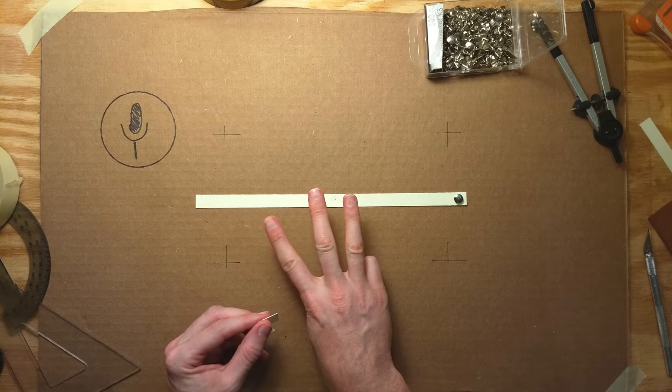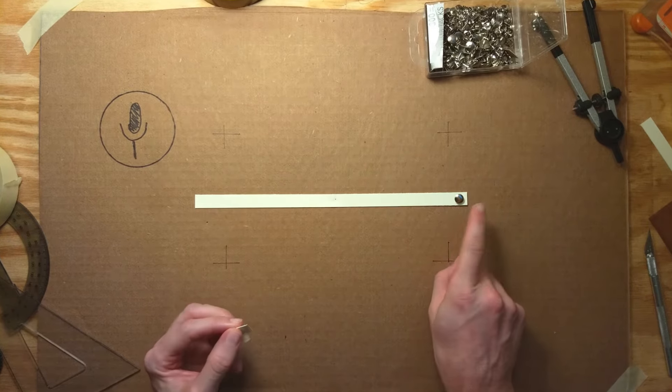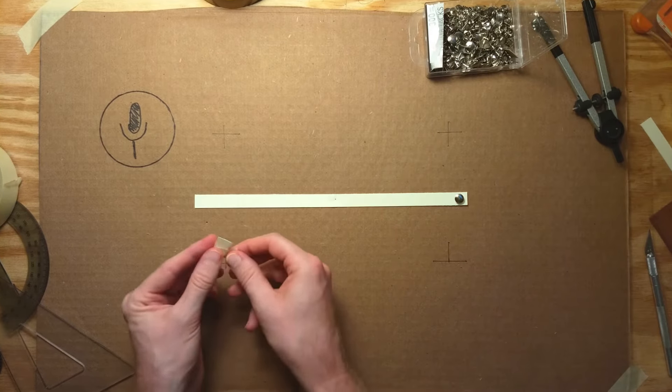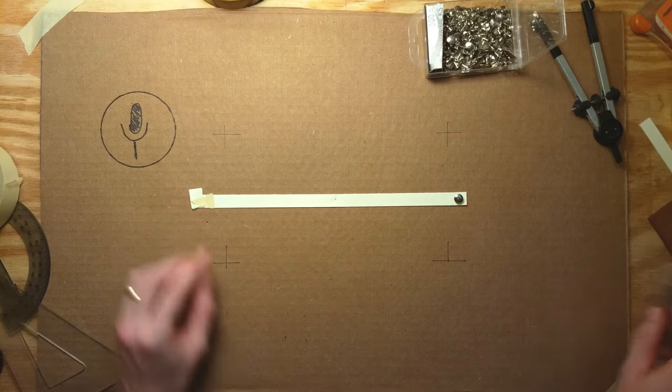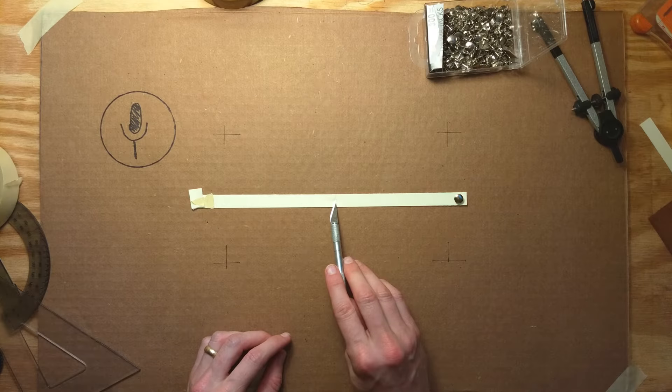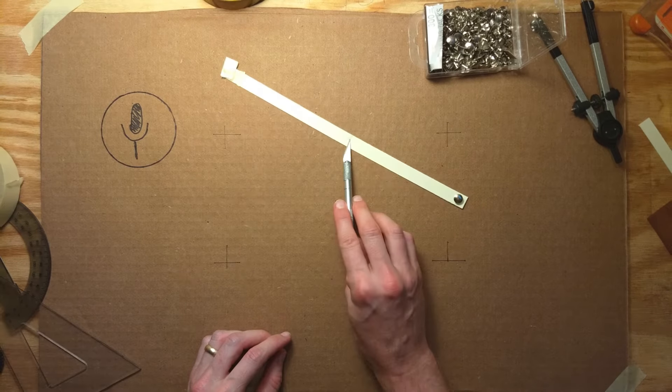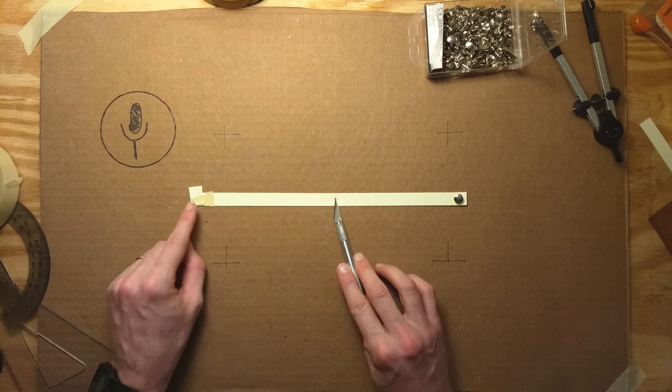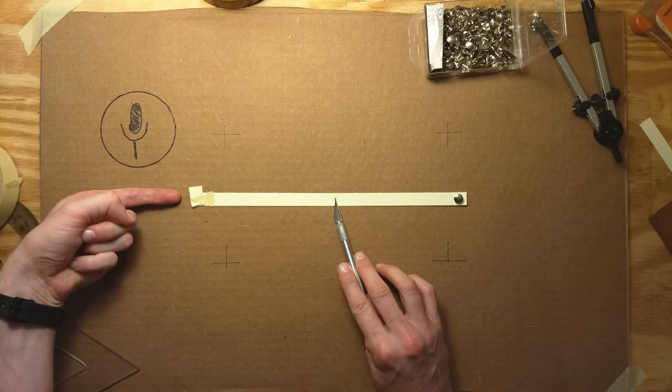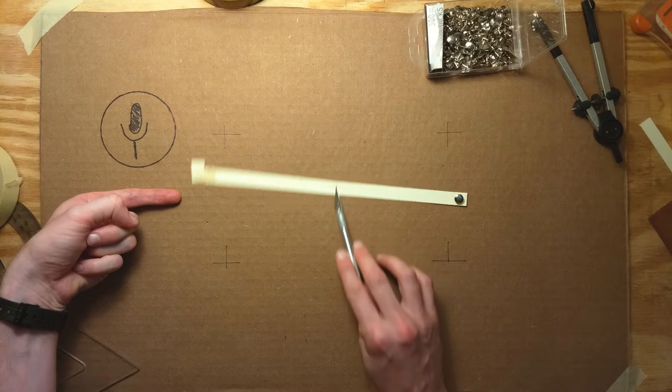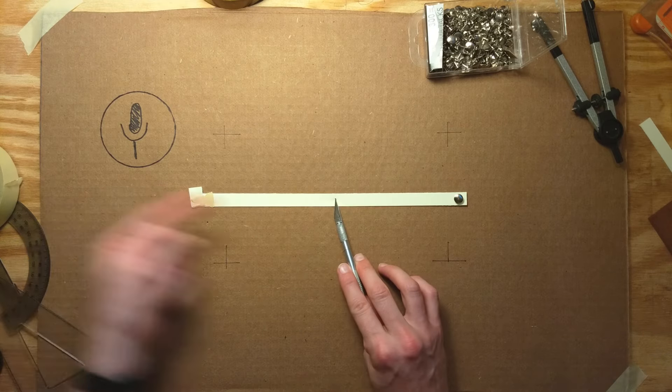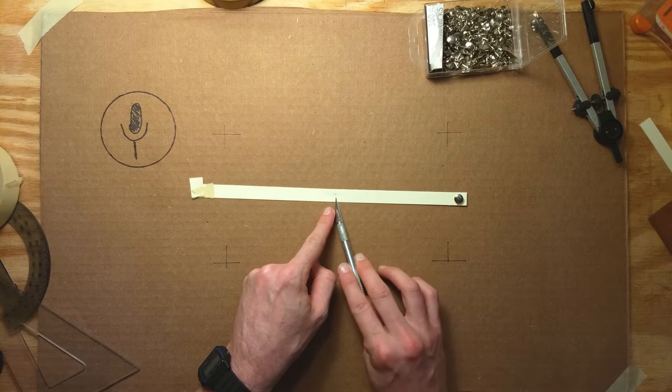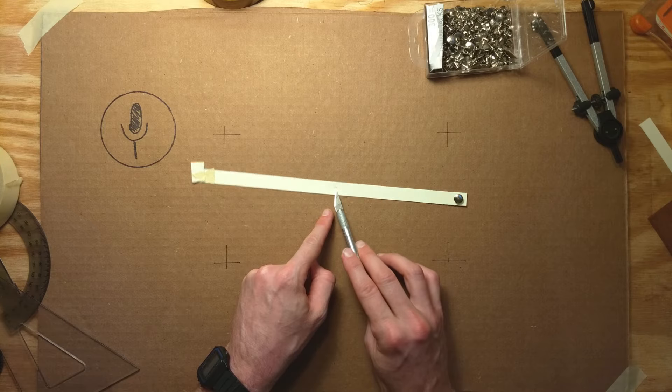The third type of lever is similar to the second, in that you have a fulcrum on one side, but the load on the end, and you apply force in the middle. This lets you move a load a great distance by moving a shorter amount, but more force.